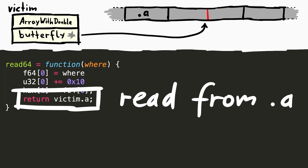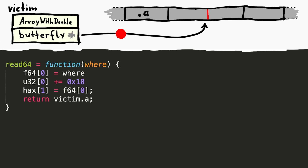When we now read the victim property .a, we follow that arbitrary butterfly address, subtract 0x10 to reach the .a property value and return it. You just built an arbitrary read.